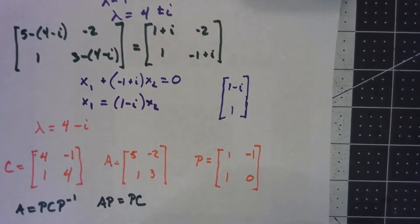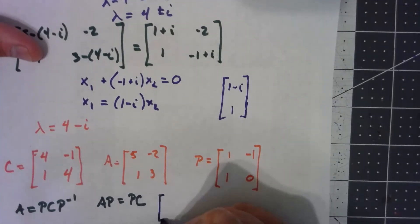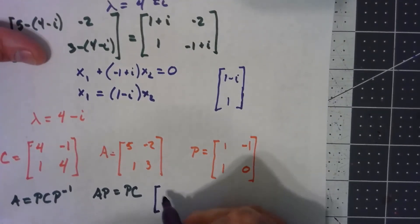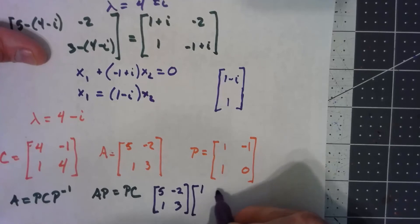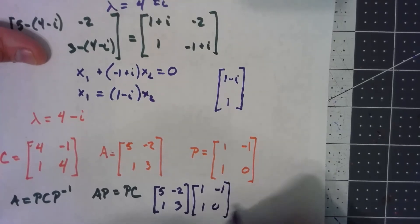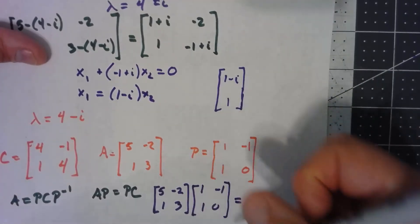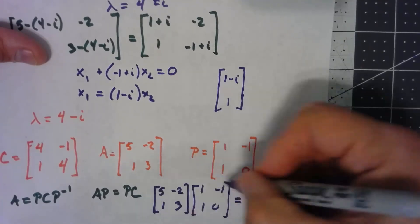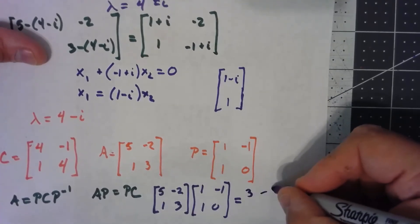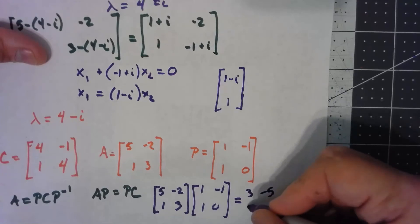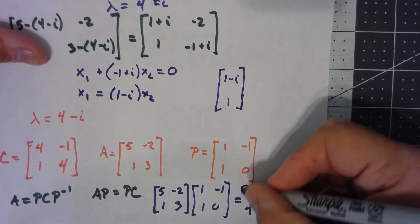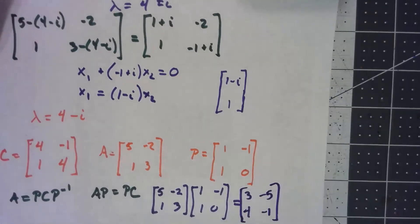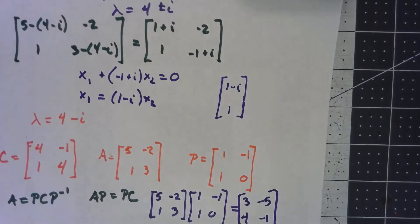So A times P would be [5, -2; 1, 3] times [1, -1; 1, 0]. That's going to give me 5-2 is 3, -5+0, 1+3 is 4, and -1+0.